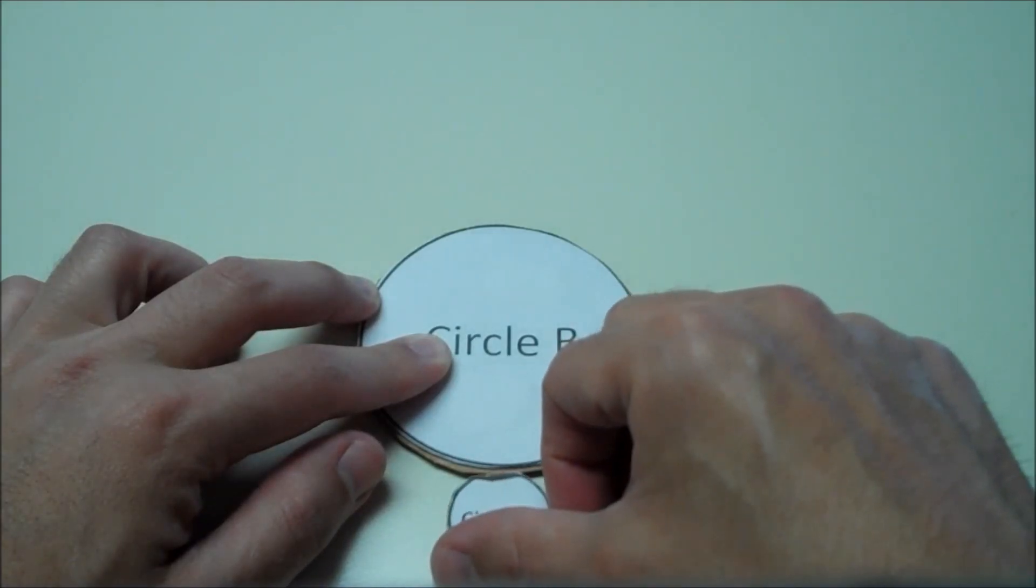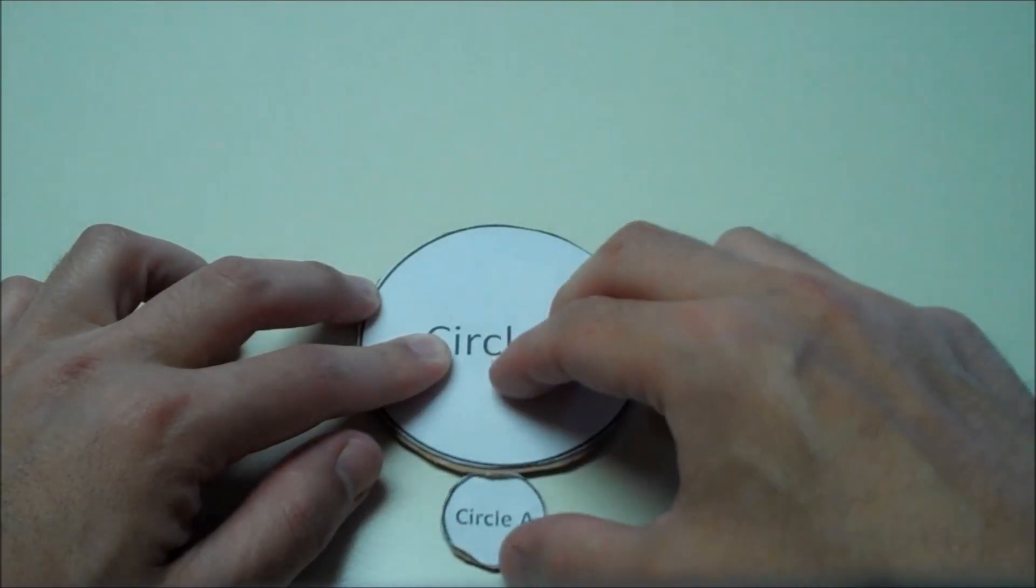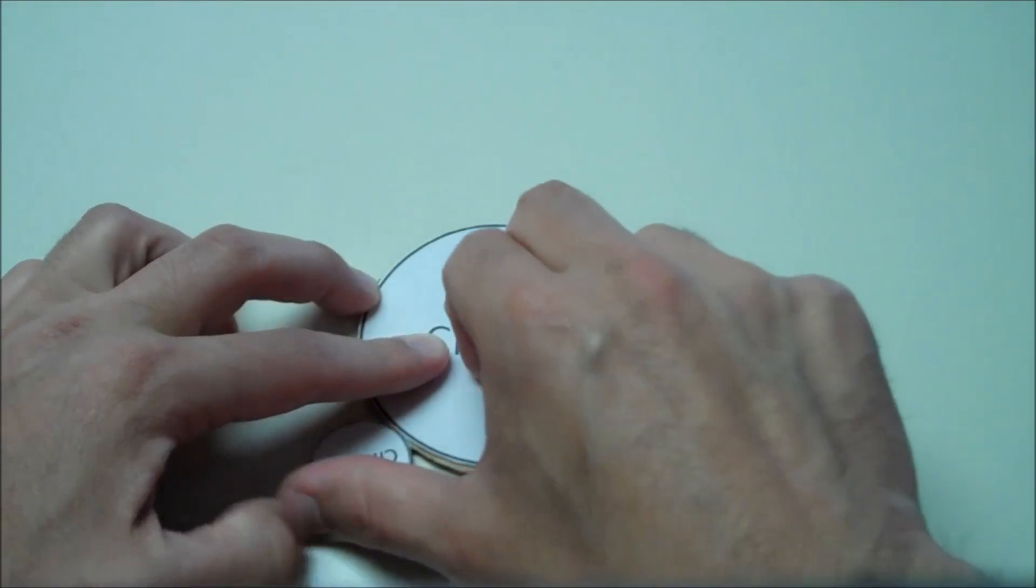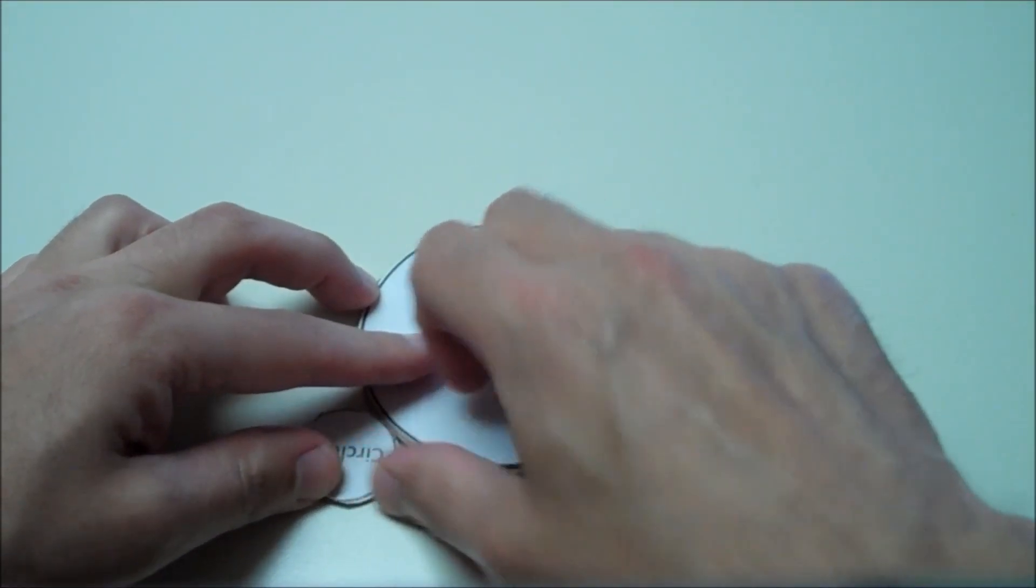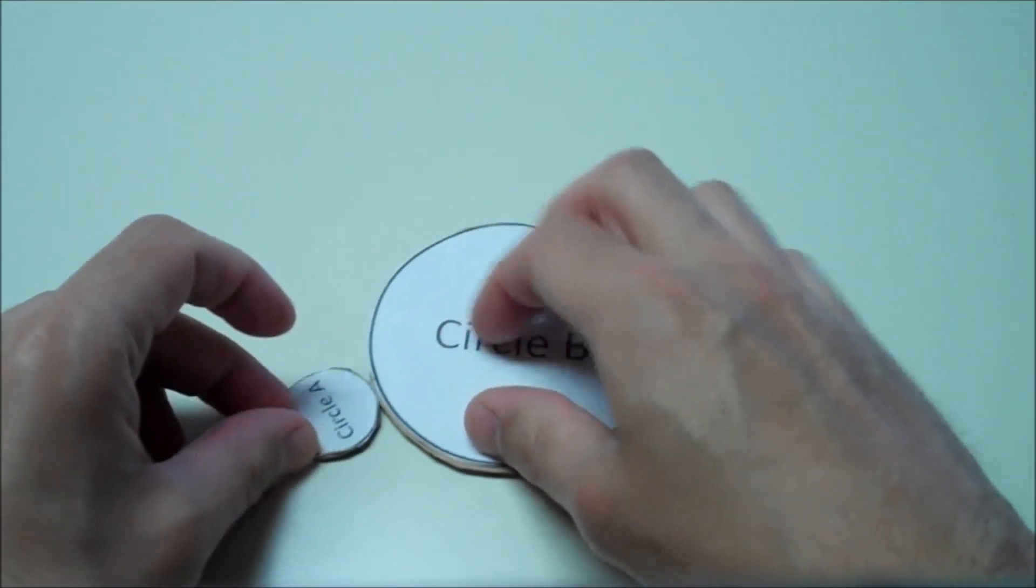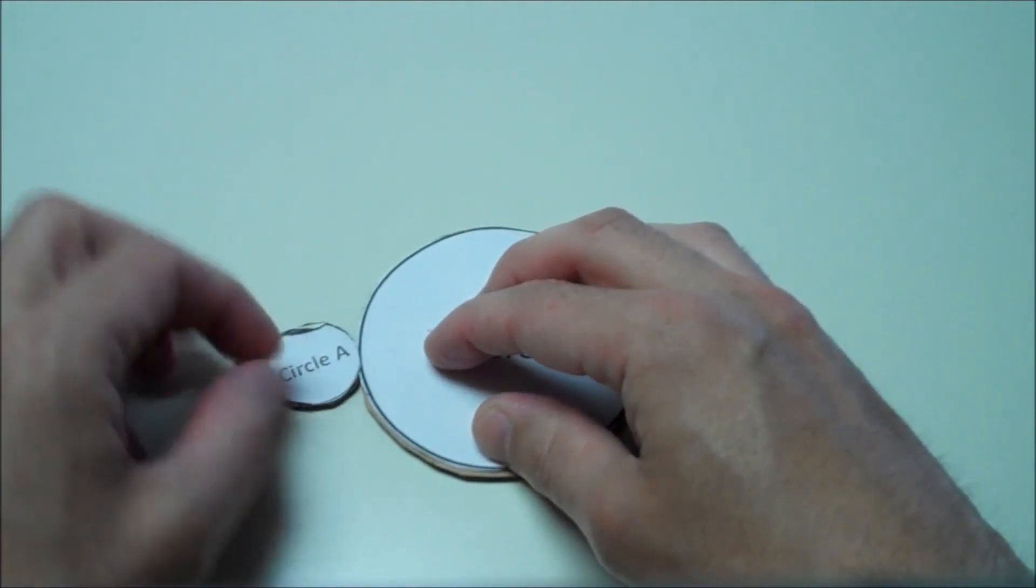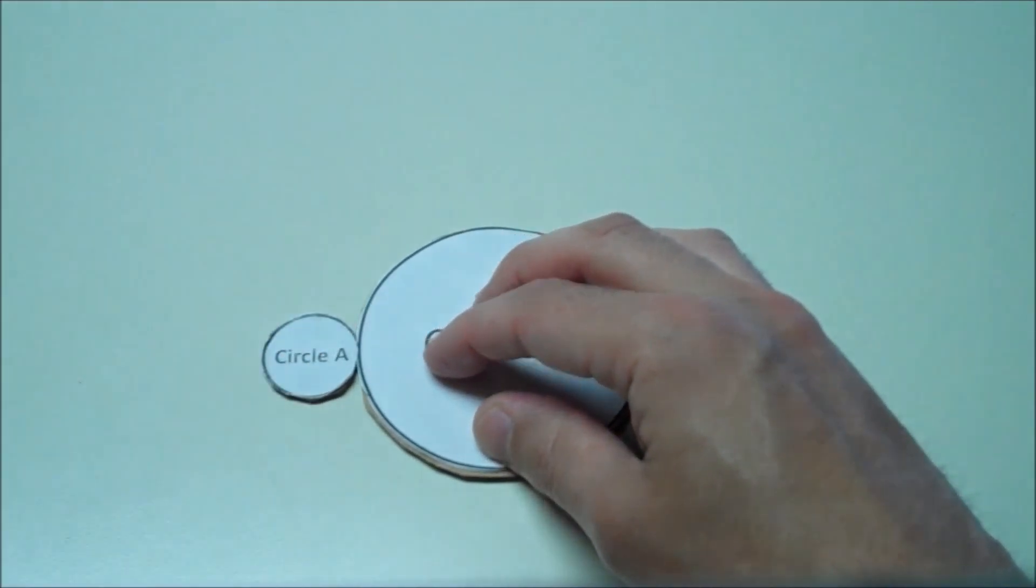When we go halfway around circle B, circle A is rolled around a second time. As we continue around, we'll see that by three-fourths of the distance, circle A will roll a third time.